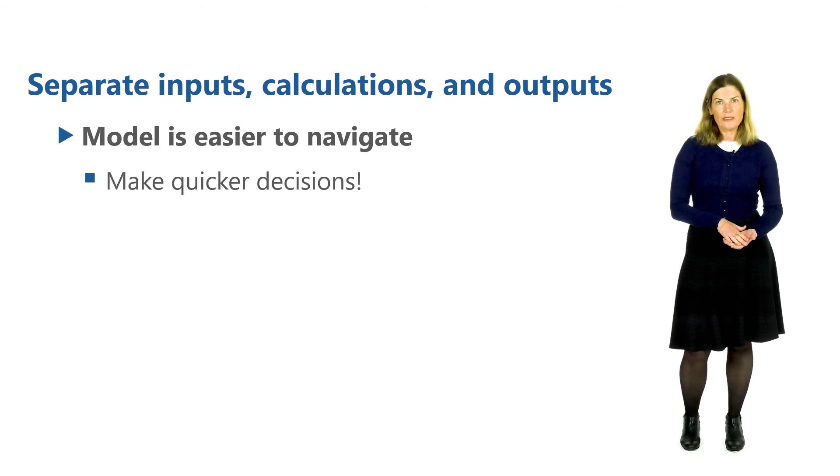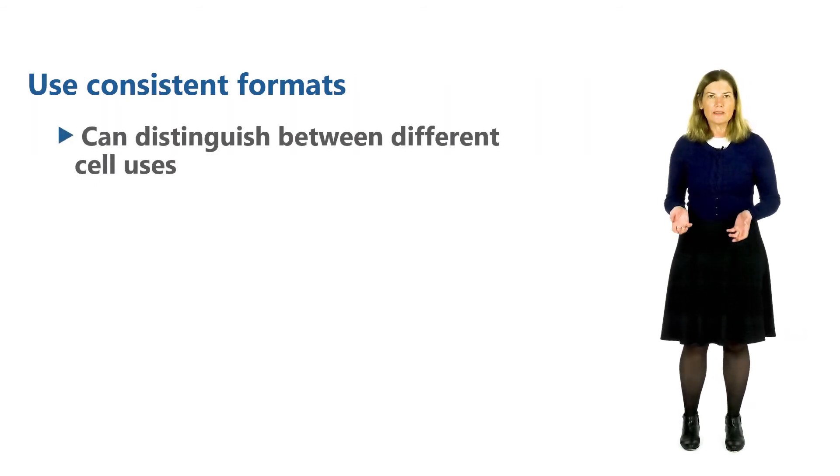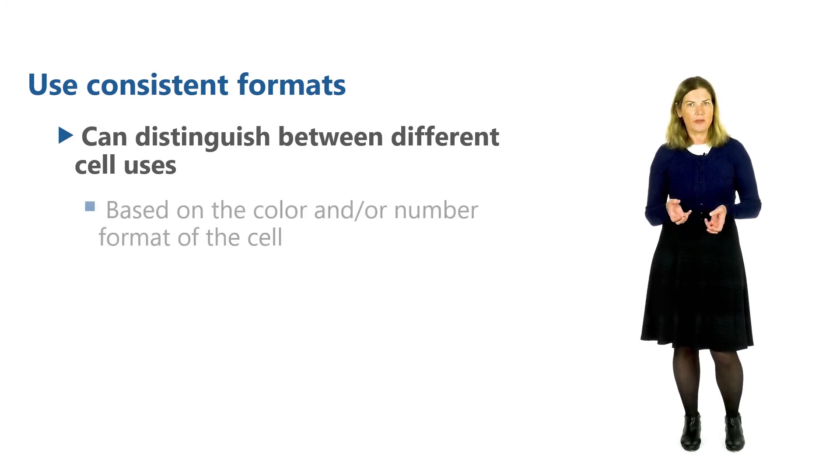Another rule of a financial model is it needs consistent use of cell and number formats. So what does this mean? All the inputs, calculations and outputs of the model are clearly identifiable. We can use specific backgrounds and fonts, colours for each type.